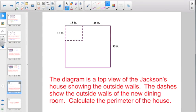Alright, last problem here. The diagram is a top view of the Jackson's house showing the outside walls. The outside walls of the house, like if you were floating on top of it with x-ray vision, you would be able to see inside the house. And the dashes show the outside walls of that new dining room they put in with the crown molding and the new carpeting.